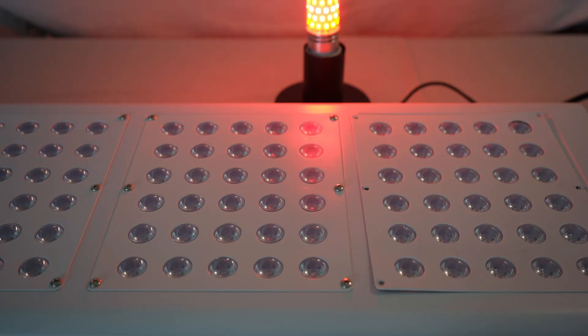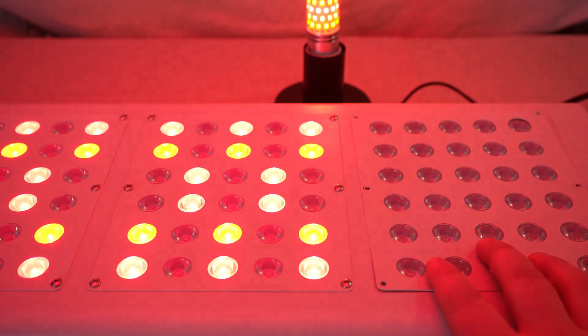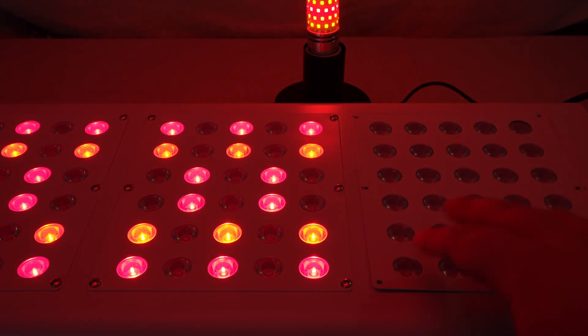And so what we can have happen is sometimes an LED panel will fail. Again, it could be a random occurrence, it could be a splash of water, it could be too much humidity or dust or something getting into the panel that corroded one of the LEDs.